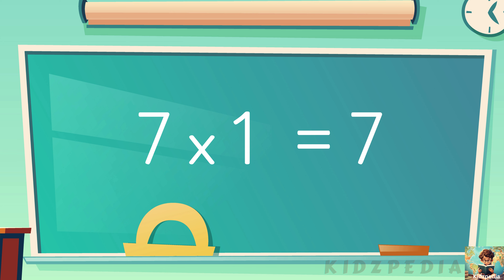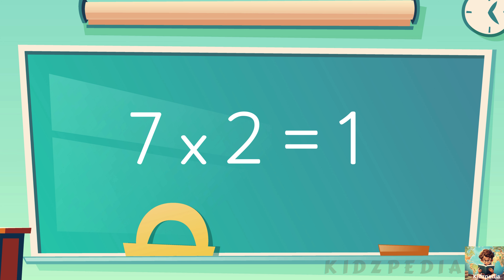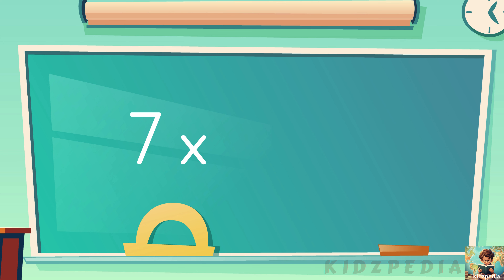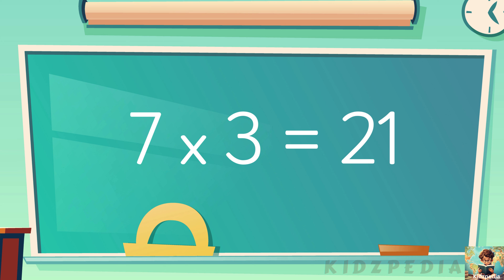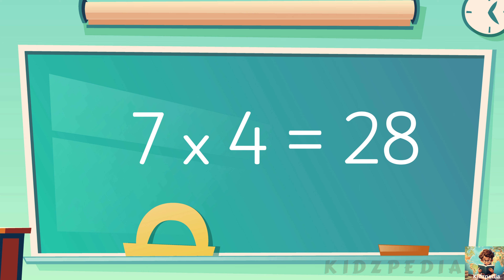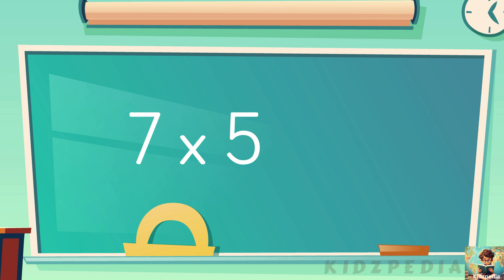7 1s are 7. 7 2s are 14. 7 3s are 21. 7 4s are 28. 7 5s are 35.